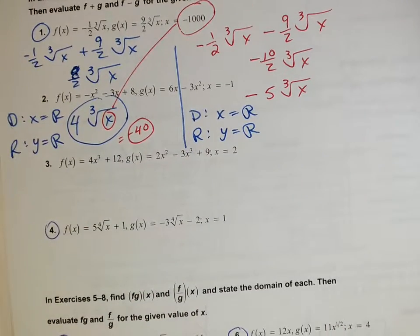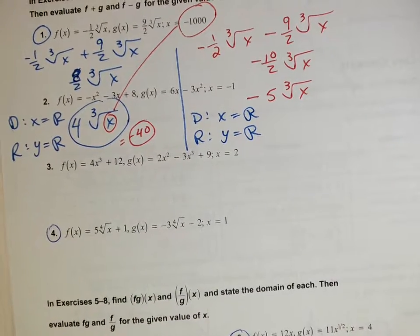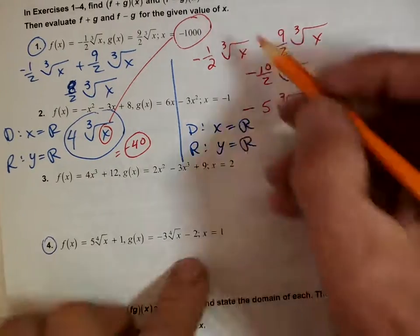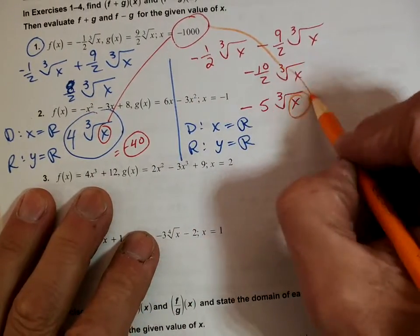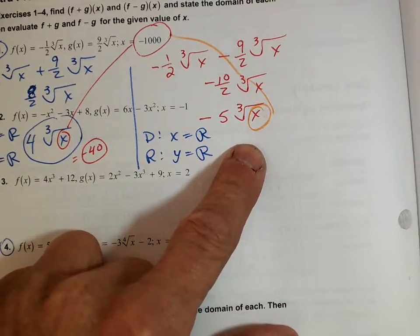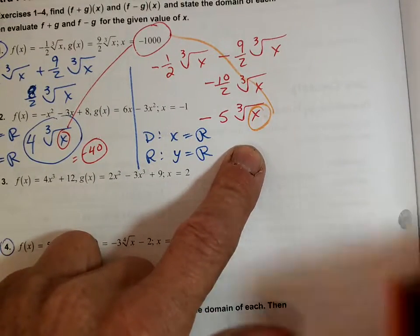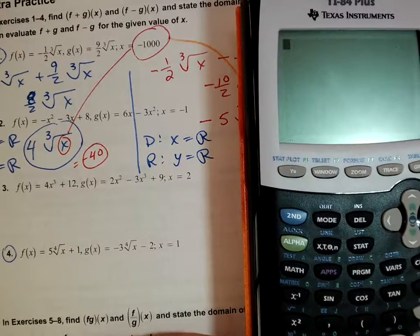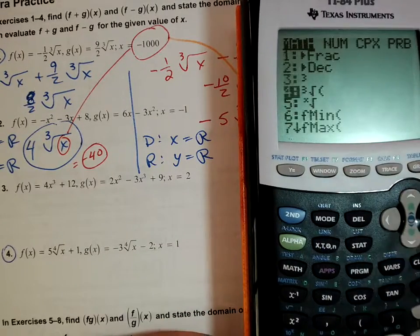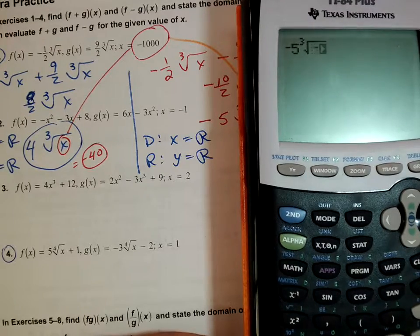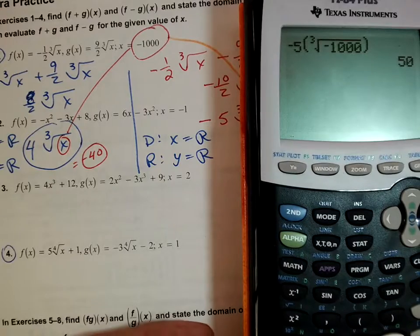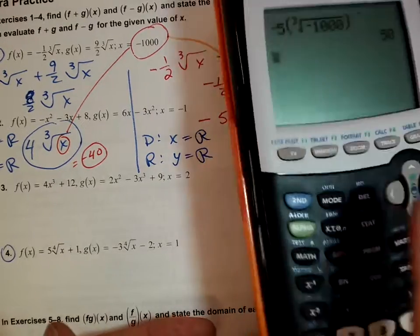The last thing is to evaluate at X equals negative one thousand. I'll plug it in and use my calculator: negative five times the cube root of negative one thousand gives a positive fifty.